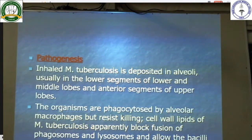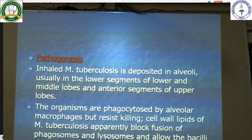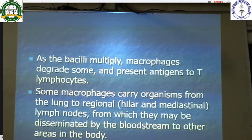Pathogenesis of tuberculosis: inhaled Mycobacterium tuberculosis is deposited in the alveoli, usually in the lower segments of the lower and middle lobes and anterior segments of the upper lobe. The organisms are phagocytosed by alveolar macrophages but resist killing. Cell wall lipids of Mycobacterium tuberculosis block fusion of phagosomes and lysosomes, allowing the bacilli to proliferate within the macrophages. As the bacilli multiply, macrophages degrade some and present antigens to T lymphocytes. Some macrophages carry the organisms to hilar and mediastinal lymph nodes, from which they may disseminate into the bloodstream.